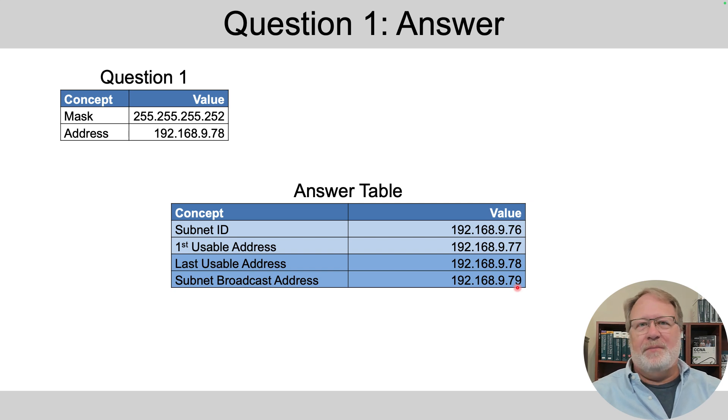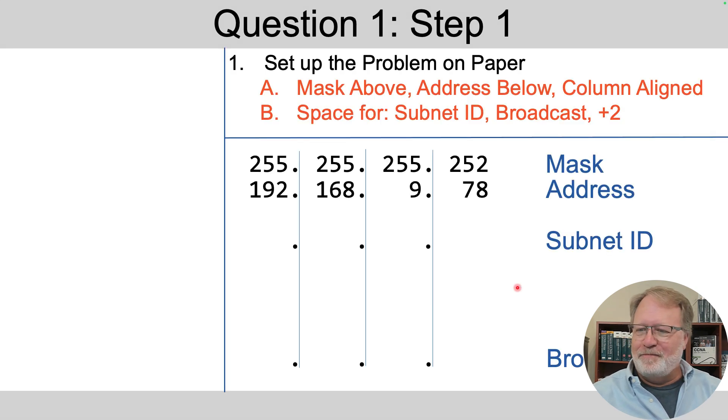Otherwise, you can skip ahead about a minute and a half, two minutes. First up, the question, we always write it this way. We put the dotted decimal mask first, then the address column aligned, and that's what this text up here means. It refers us to what my written process is to get there. And we leave space for the subnet ID first, last, and subnet broadcast address written below. So that's our workspace.